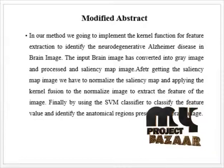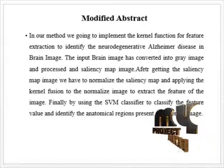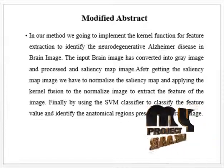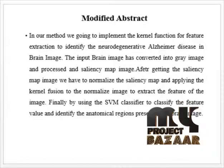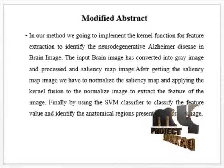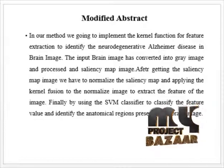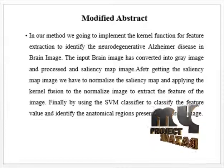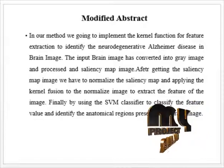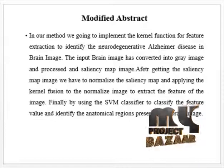Our proposed method presents a new fully automatic imaging analysis method that reveals discriminative brain patterns associated with the presence of neurodegenerative diseases. The input image is converted into a gray image and processed by the saliency map. After obtaining the saliency map image, we normalize it by changing the intensity level, then apply kernel fusion for feature extraction.